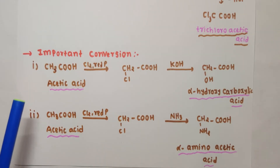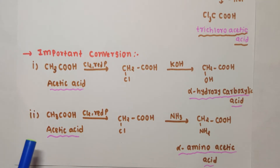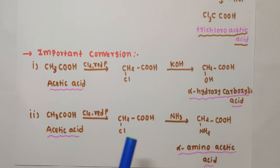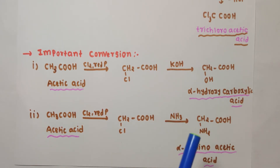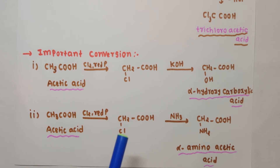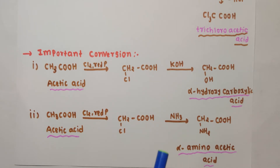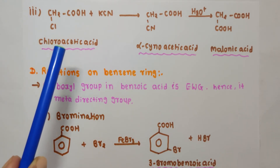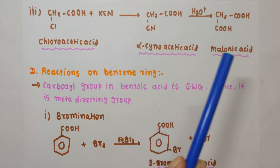Another important conversion: acetic acid upon HVZ reaction gives chloroacetic acid. Chloroacetic acid on reaction with ammonia undergoes nucleophilic substitution — HCl is eliminated and Cl is replaced by NH2. This gives NH2CH2COOH, which is alpha-amino acetic acid (glycine).